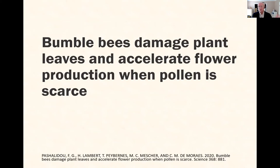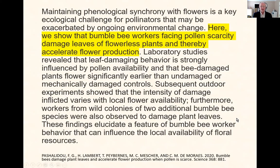Here's an example: 'Bumblebees Damage Plant Leaves and Accelerate Flower Production When Pollen Is Scarce.' The title right there tells you what the major finding of the paper is. You're going to know whether you want to go into that paper and get the details. Because they put it so clearly, it's also pretty interesting — which means it's surprising. And if you look at the abstract, that same point is made right there, and they'll make it in the main part of the paper too.